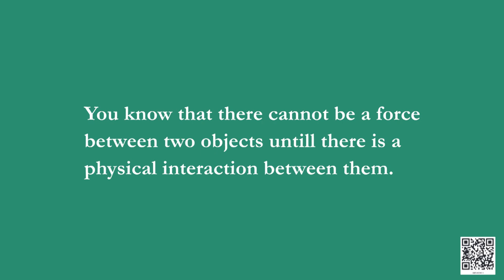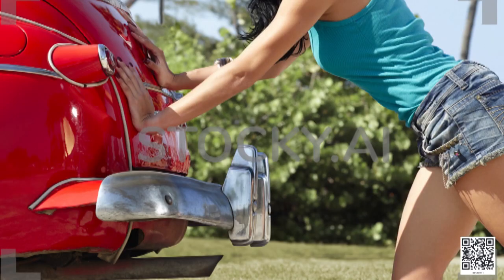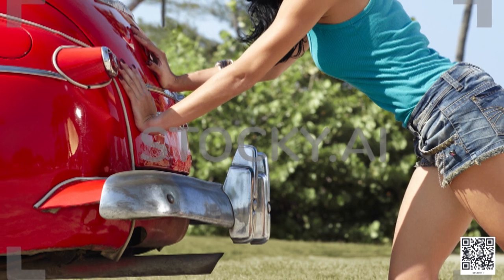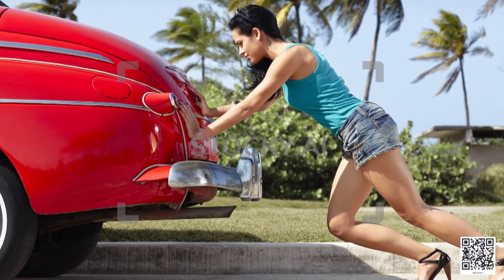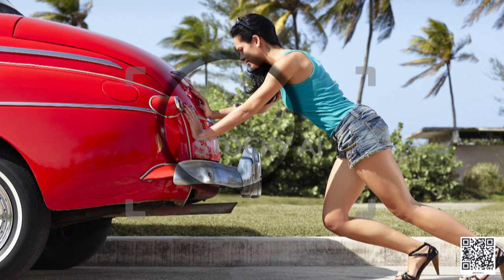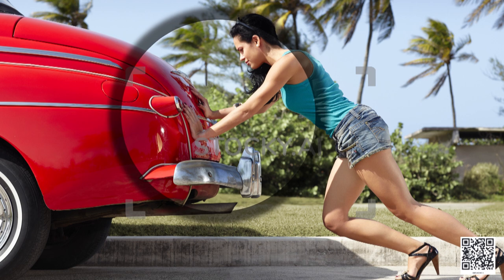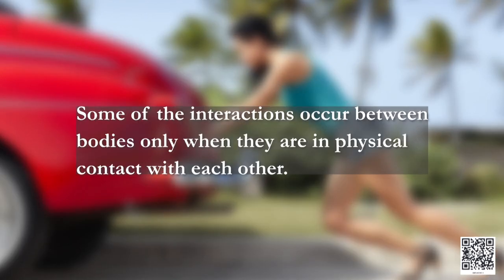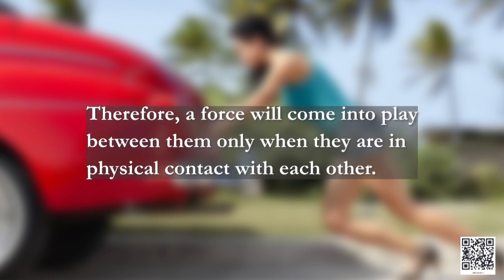There cannot be a force between two objects until there is a physical interaction between them. Consider a person pushing a car — he or she cannot push a car unless the body is in contact with it. You cannot exert force on another person without being in contact with that person. Some interactions occur between bodies only when they are in physical contact with each other. Such forces are called contact forces. Muscular force and frictional force are examples of contact forces.